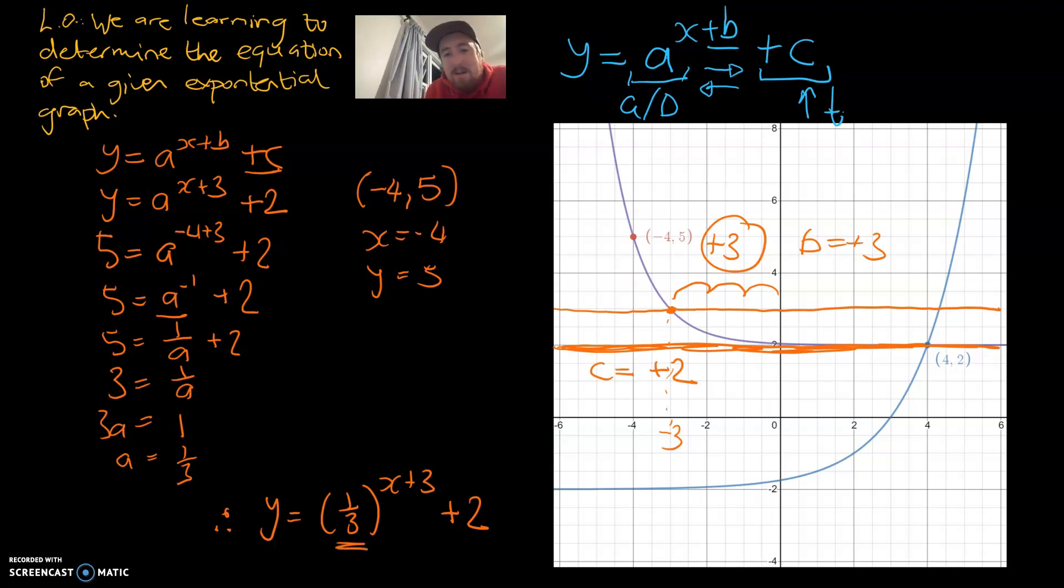And the last thing I want to note is that one third, that suggests that it's a decay model so it's going down whereas our first example from memory that was a two, that's a growth model and that was going up. So hopefully you found these two examples useful, let's get into some more questions.